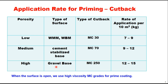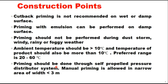The correct quantity of primer is one that can be absorbed by the surface without causing runoff of excessive primer, and that will penetrate to a depth of 8 to 10 millimeters. Important points during construction: cutback primer is not recommended for wet or damp surfaces, however priming with emulsion can be performed on damp surfaces. Priming should not be performed during dust storms, windy, rainy, or foggy weather. The ambient temperature and the temperature of the product should both be more than 10°C, with a preferred range of 20 to 60°C.